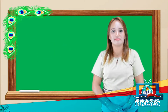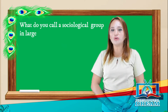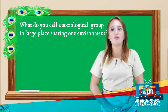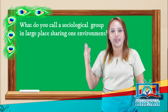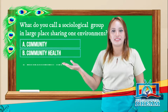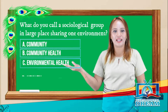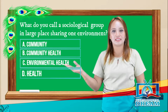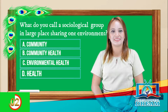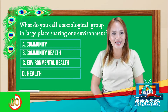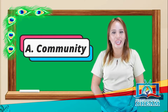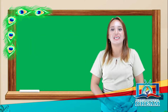Next question. What do you call a sociological group in a large-scale sharing one environment? A. Community, B. Community health, C. Environmental health, D. Health. Time is up! Let us reveal the answer — it is letter A, Community. Let us proceed to question number 3.